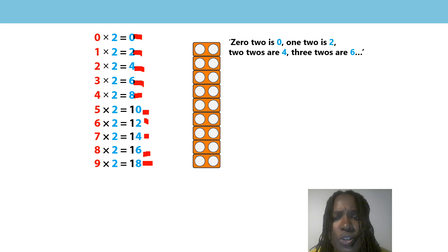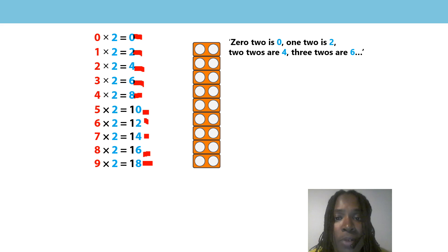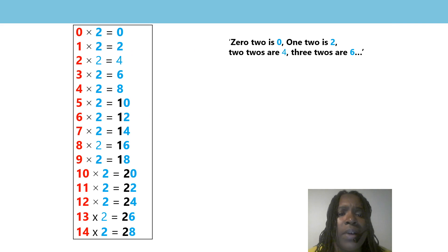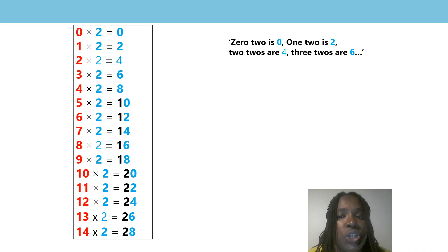I wonder why that is. That's right — that's because all our products are even. Great job. Now I wonder, would this pattern still be there even if I continue to count in groups of 2 beyond my known facts?